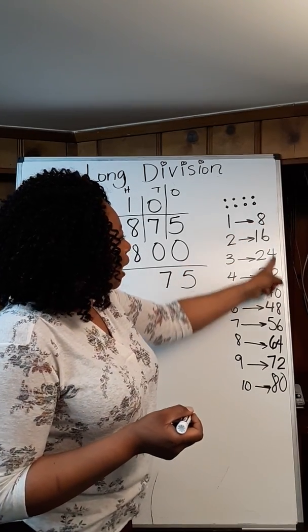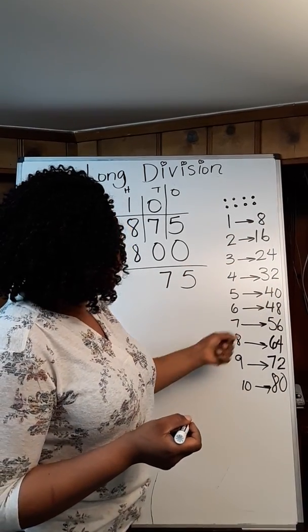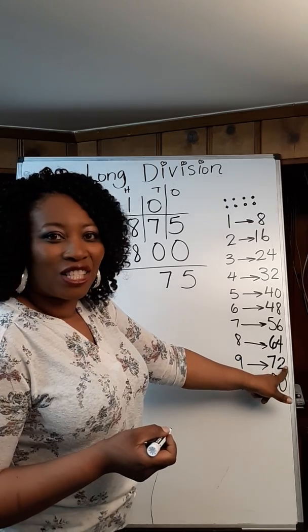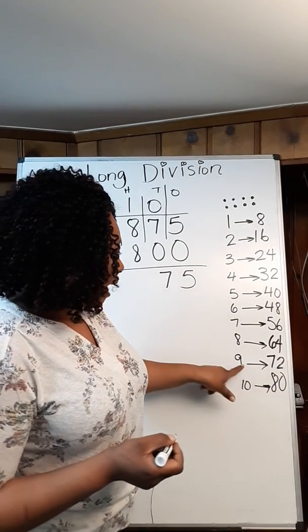Eight going into 75, how many times? Let's take a look at my column and see if I have enough. Look, 72 is right here. It means I have nine.